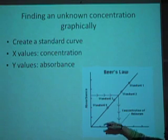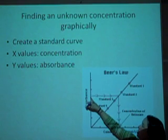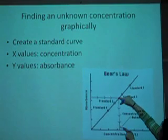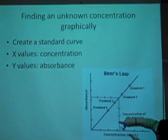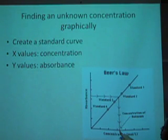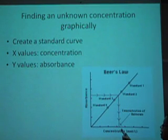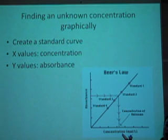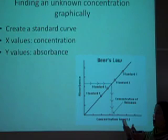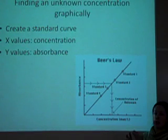Then if we have an absorbance that we read, we can find where that would intersect our line of best fit. And then just draw an imaginary line down to the concentration axis and estimate where that concentration would be just graphically. This is definitely not as accurate as using the Beer-Lambert Law. But you will create a standard curve like this and use it to try to estimate an unknown concentration as well.